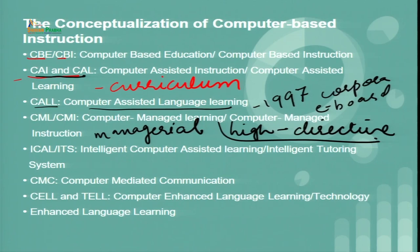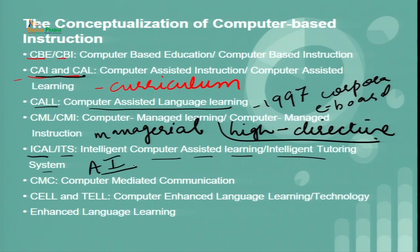Coming to ICAL and ITS: ICAL stands for Intelligent Computer Assisted Learning and ITS stands for Intelligent Tutoring System. These concepts are important because they are grounded in the theory and technique of artificial intelligence. Since AI is a recent development, it is getting exponential growth in language teaching and learning — for example, building a model of what the student knows at a specific time and then providing instructions accordingly. It also provides natural language processing (NLP), helping to create a better platform for human-computer interaction.